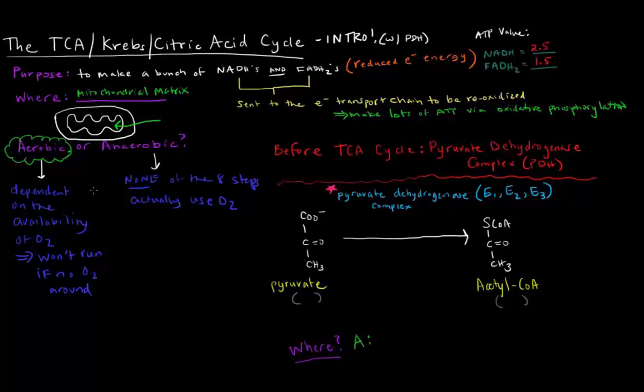So, now, before we can actually get the TCA cycle to even start running, we need to have this thing called the pyruvate dehydrogenase complex occur. Now, what is this thing? If you recall, from glycolysis, we created three carbon pyruvates. We created two pyruvates from one glucose. So, the pyruvate dehydrogenase complex converts pyruvate into acetyl-CoA, which is basically, this thing can actually go through the TCA cycle.